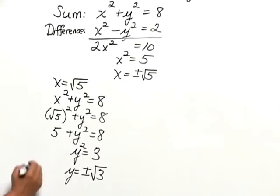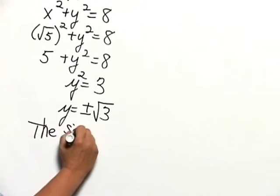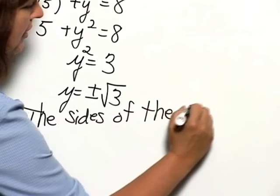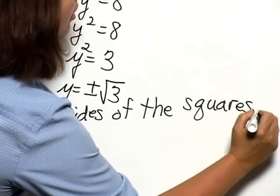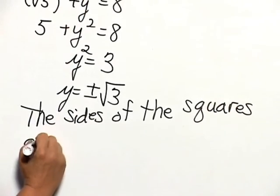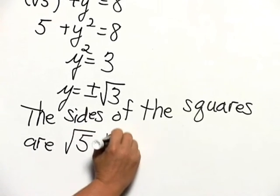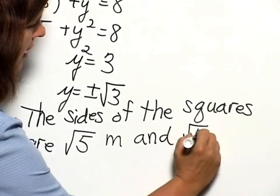So we can state that the sides of the squares are the square root of 5 meters and the square root of 3 meters.